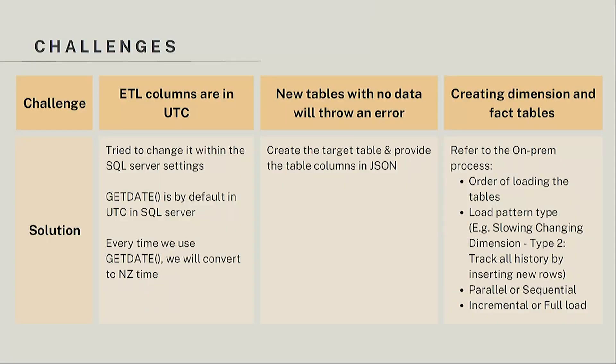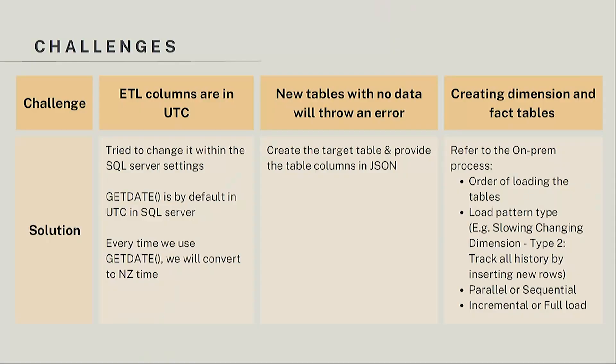Additionally, because we have so many dimension and fact tables, it gets complicated trying to configure all of them — especially since there are many factors to consider. For example, the order in which you load matters because some tables depend on other tables. We also have to consider the load pattern type: if a row is deleted in the source database, do we want to flag it as deleted or delete the row as well? We also have to think about whether to load in parallel or sequential, and whether to do a full load or an incremental load. Incremental load means loading data incrementally — for example, only last month's data — rather than the whole table.